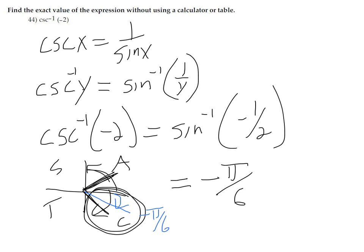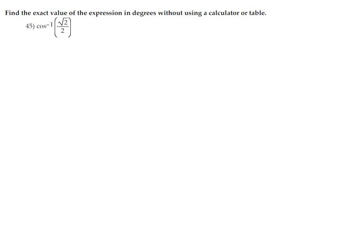Because arcsine will only ever give you values between positive and negative 90 degrees. Next question: arc cosine of square root of 2 over 2.